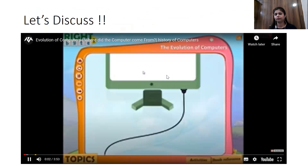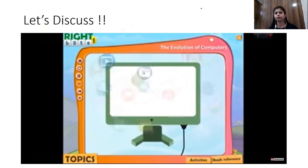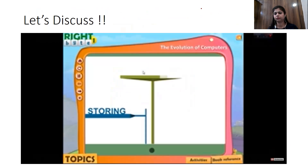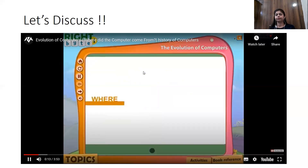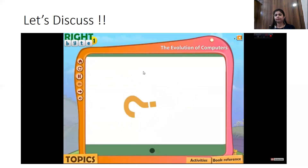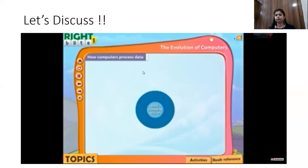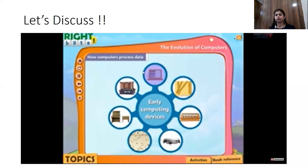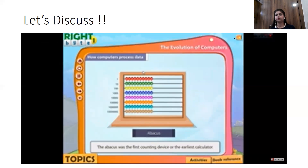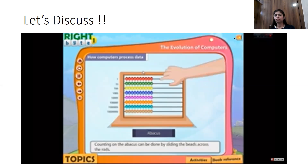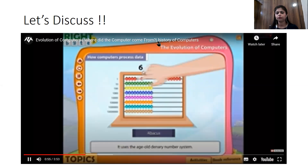Computers have opened a magical world for us in the modern period. We use computers for various purposes like storing information, communicating, and entertaining ourselves. Let's travel back in time to know the history of computers. Around 3,000 years ago, people used the abacus to calculate complex sums. The abacus was the first counting device or the earliest calculator. It was used to add and subtract numbers. It consists of a wooden frame with rods, each having beads. Counting on the abacus is done by sliding the beads across the rods. It uses the age-old denary number system.